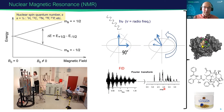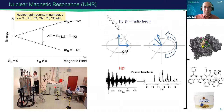The free induction decay is a superposition of all different discrete frequencies detected — a plot of a decaying oscillating signal over time. We can do a Fourier transform, which converts that amplitude versus time signal to frequency versus intensity — that's the NMR spectrum. By interpreting that data, we can figure out structures of small molecules, of proteins, interactions between small molecules and proteins, and we can look at mixtures.